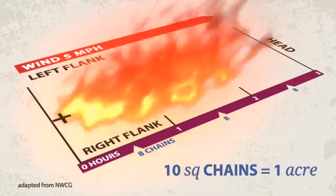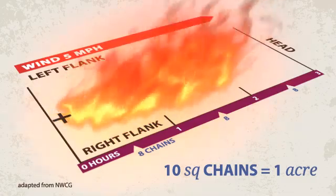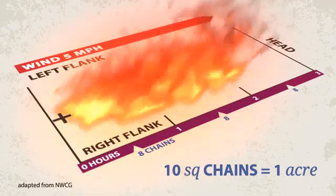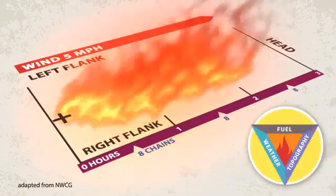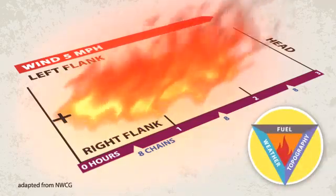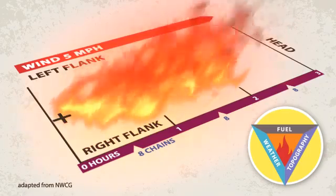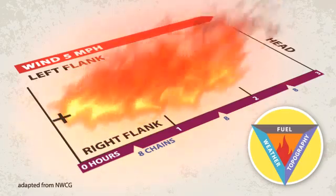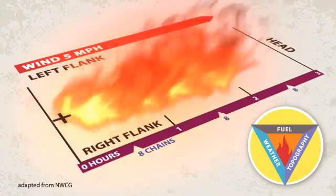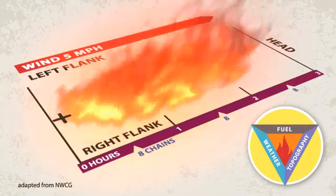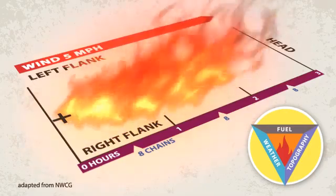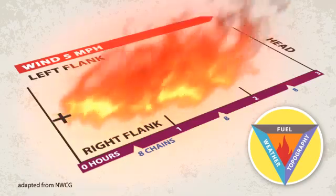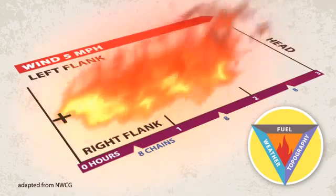The rate of spread is different for different parts of a fire, which is explained further later in this video. All parts of the fire environment triangle can influence the rate of spread. For example, high wind speeds, steep slopes, and low fuel moistures can lead to rapid rate of spread. More details on fire environment are introduced in other videos.